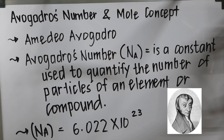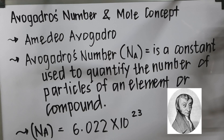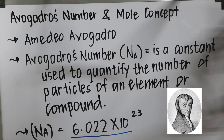Hello students, we are now about to discuss Avogadro's number and the mole concept. Avogadro's number was first formulated by a great scientist named Amedeo Avogadro. Avogadro's number, or NA, is a constant used to quantify the number of particles of an element or a compound. The value of Avogadro's number is 6.022 times 10 raised to 23.